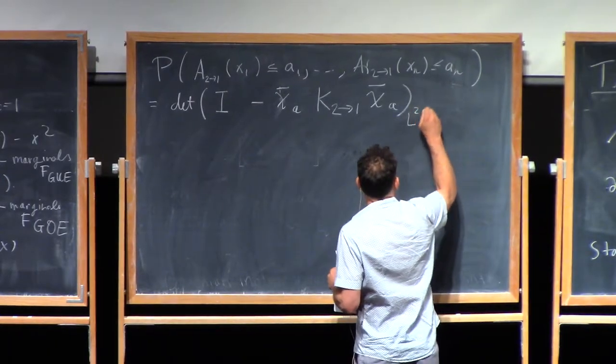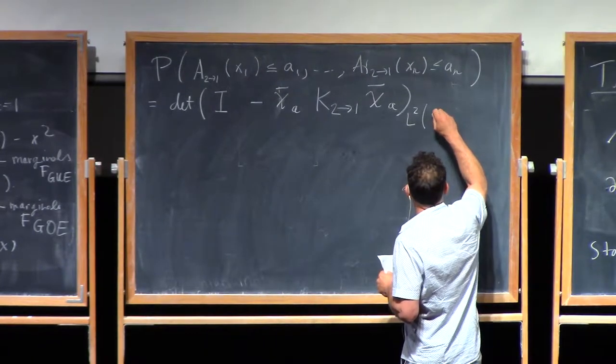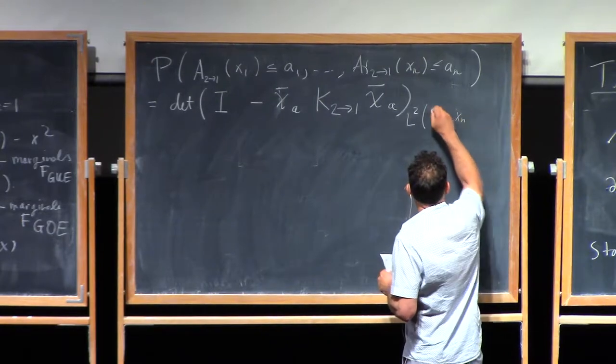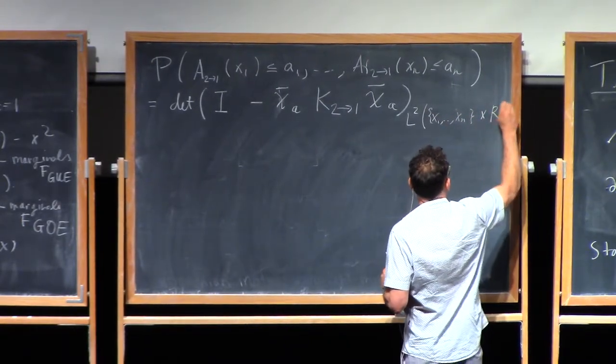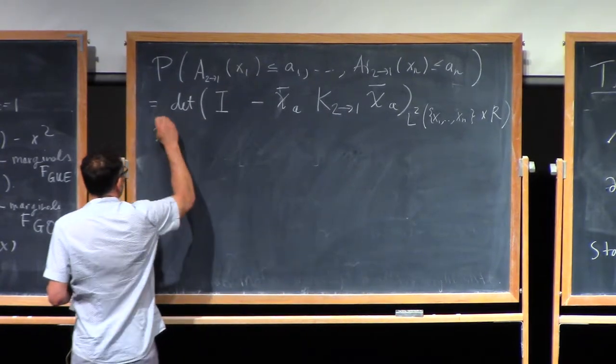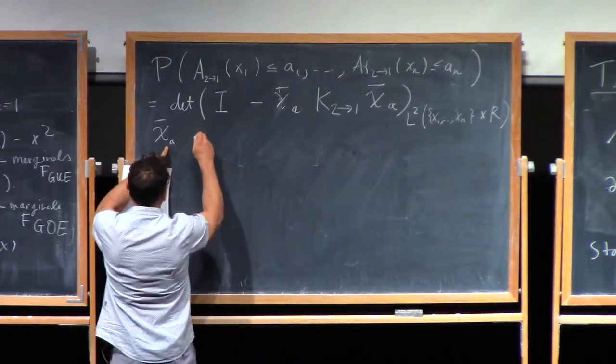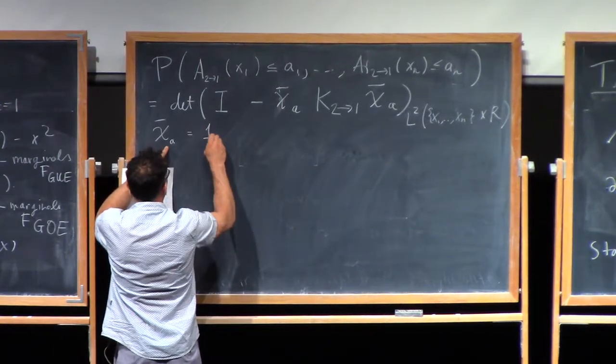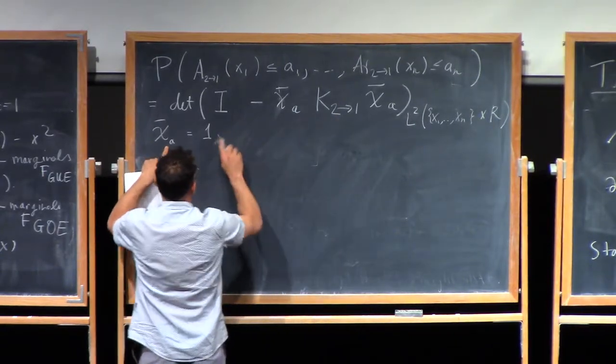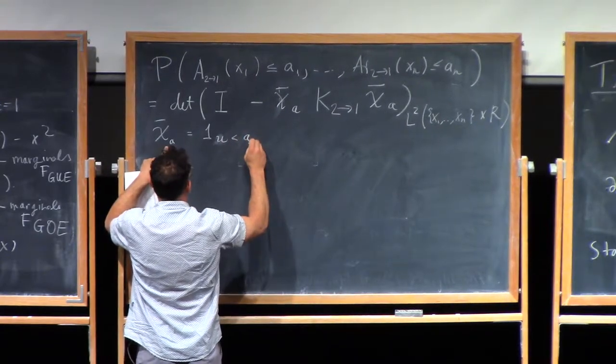On an extended L2 space, here we've got X_1, X_n times R. Chi bar A is the thing which in the X_1th coordinate is the indicator function that the underlying variable, which I shouldn't call X, I guess I'll call it U, is less than A.